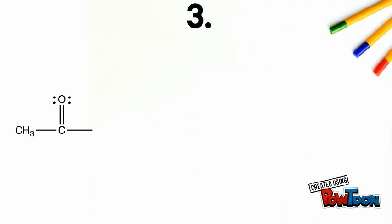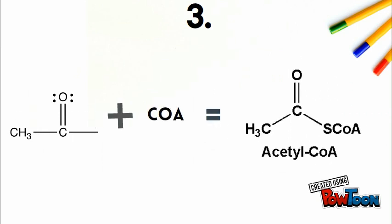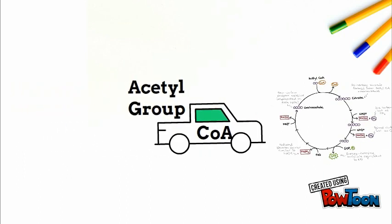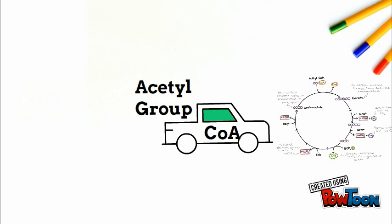In our third and final step, the acetyl group formed in step two reacts with coenzyme A to form a final product of acetyl-CoA. Coenzyme A is especially cool because it acts as a carrier of acetyl groups to the Krebs cycle.